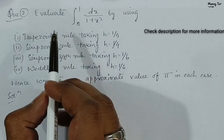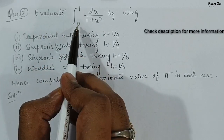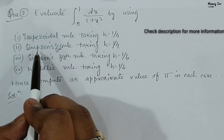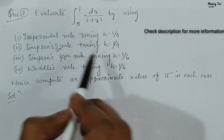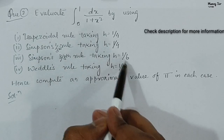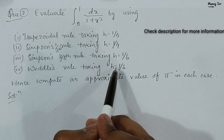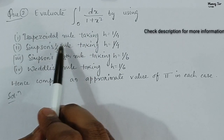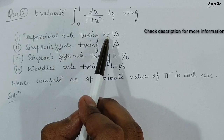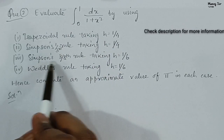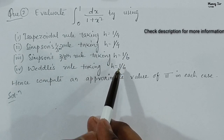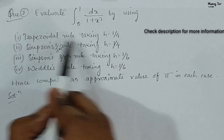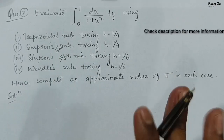Let us start with the problem. The question says: evaluate the integration from 0 to 1 of dx upon (1 + x²) by using the trapezoidal rule taking h = 1/4, Simpson's one-third rule taking h = 1/4, Simpson's 3/8 rule taking h = 1/6, and Weddle's rule taking h = 1/6. After that, we need to compute an approximate value of pi in each case.